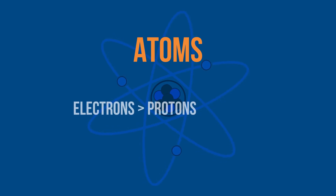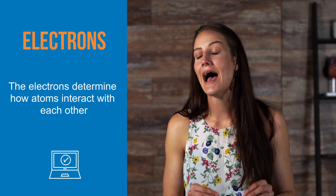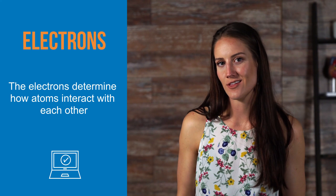If the atom has more electrons than protons, its charge will be negative. With fewer electrons than protons, the atom will have a positive charge. The electrons determine how atoms interact with each other.